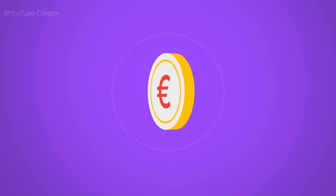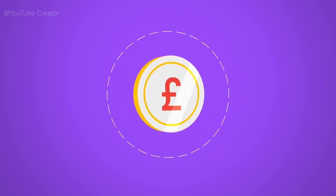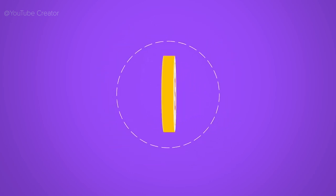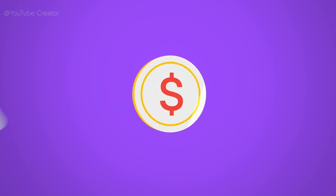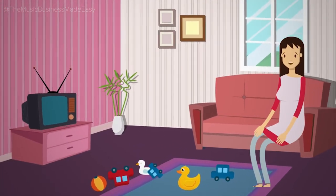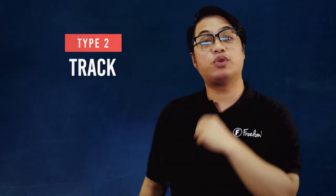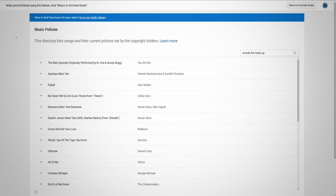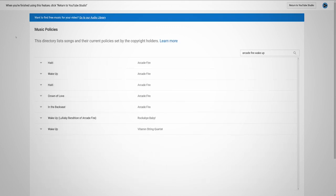Now, let's say you already have the Content ID claim on your system and people are getting your content. Here are some of the policies you can implement in your claimed videos. Number 1 is block. No other people can upload your content. You cannot get revenue from it because you are blocking everyone from uploading your content on YouTube. Number 2 is track. You can track the number of views, viewership, and statistics of other people who use your content.